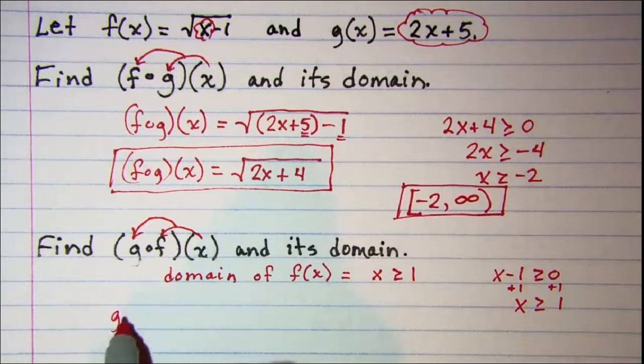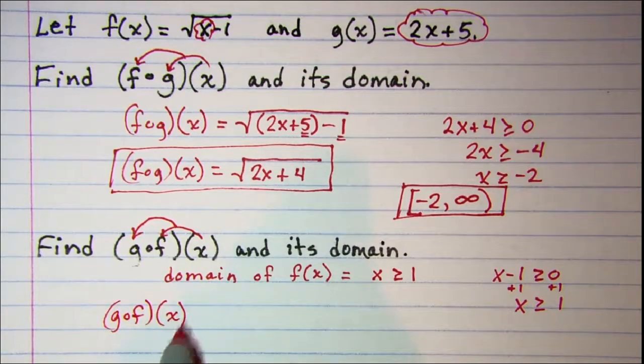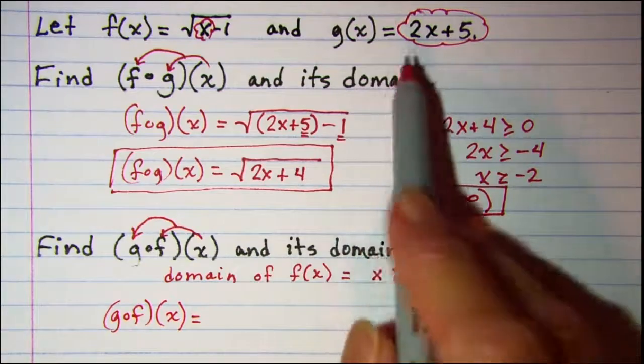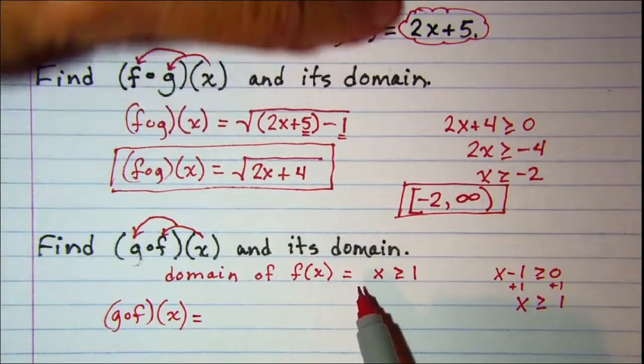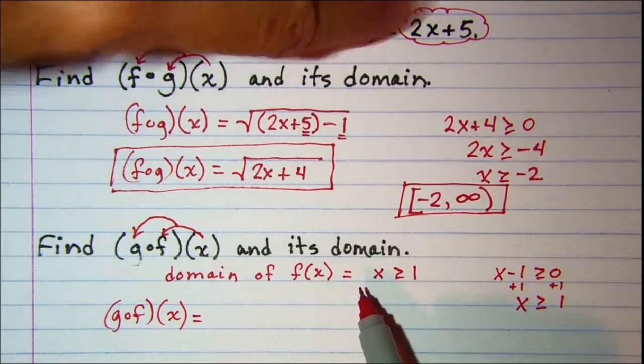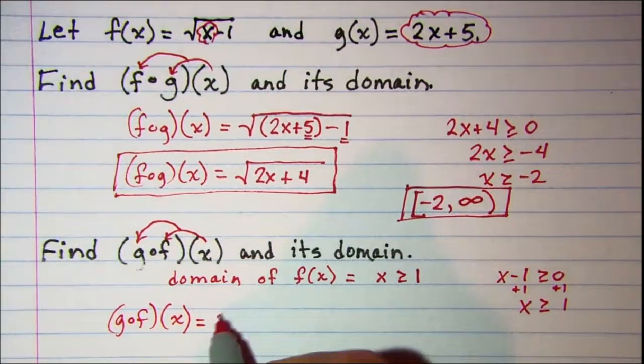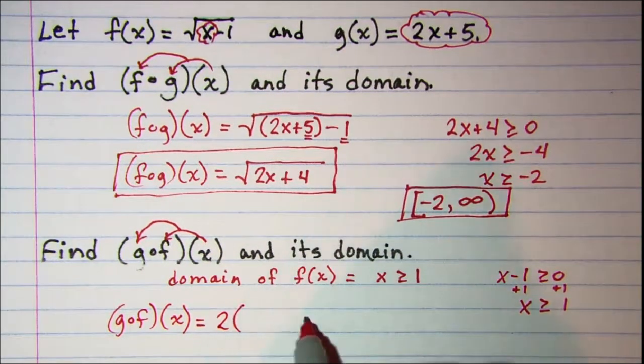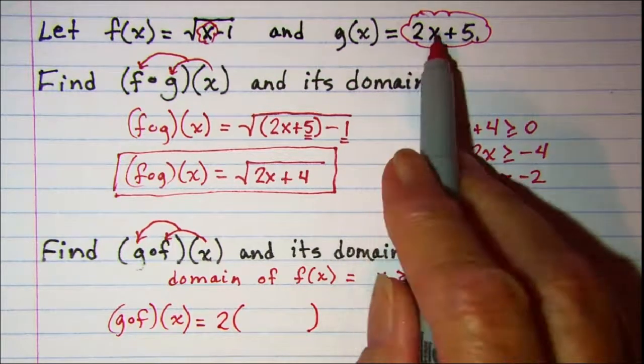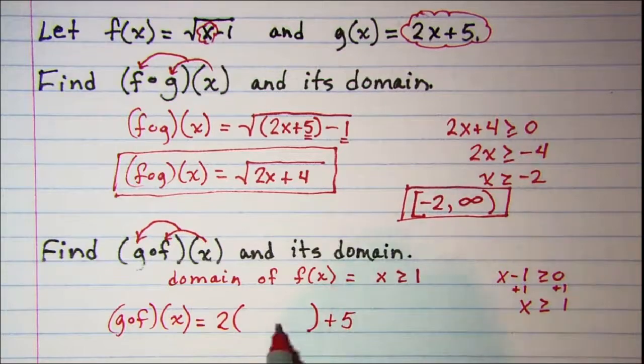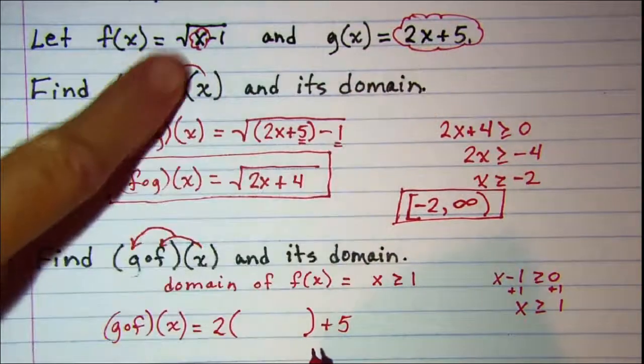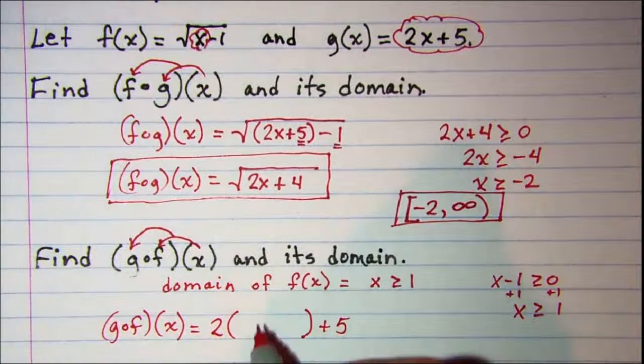So g composition f is equal to, I'll start writing my g function, 2 times and then plus 5. So in here in place of x I'll put radical x minus 1.